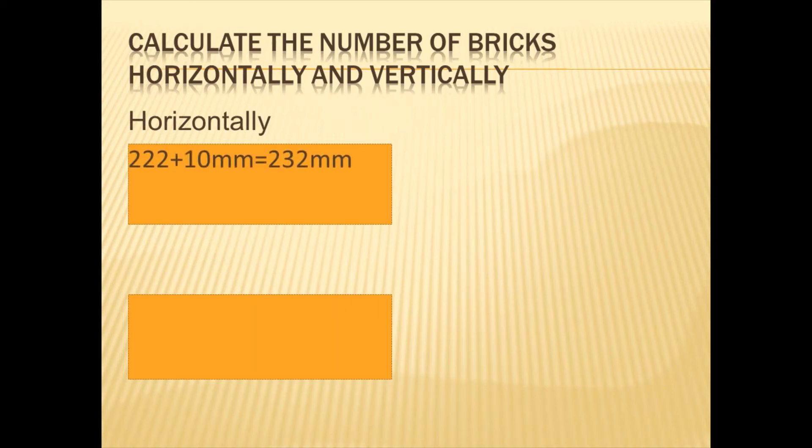To start with the horizontal, we are going to take the 222 millimeters plus the 10 millimeter joint size, which will give us 232 millimeters. And then we'll take 1000, which is one meter (1000 millimeters), divided by 232 millimeters to give us 4.310 bricks. Now, I like working to three decimal places for accuracy, and what I will do is I will just round up my final answer, but for now we're just going to leave it to three decimal places.